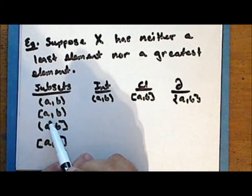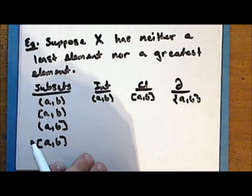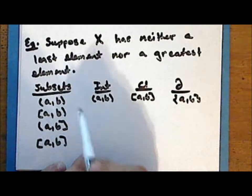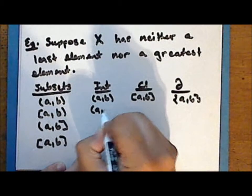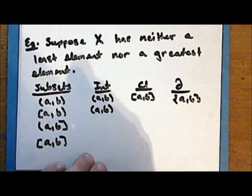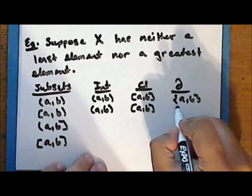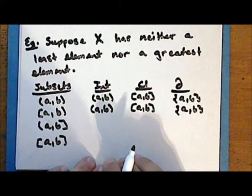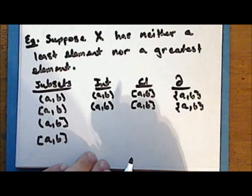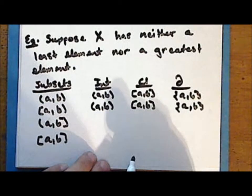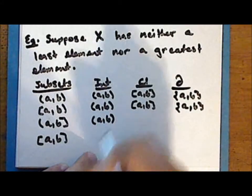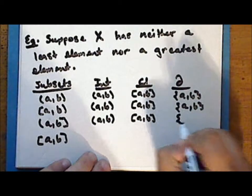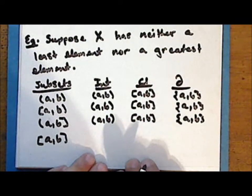The half-open interval from a to b inclusive of a is neither open nor closed. The largest open set contained in this interval is the open interval from a to b. The smallest closed set containing it is the closed interval from a to b, and the boundary is the set containing the elements a and b. The half-open interval from a to b inclusive of b is likewise neither open nor closed. The largest open set contained in it is the open interval from a to b, the smallest closed set containing it is the closed interval from a to b, and the boundary is again the set containing a and b.